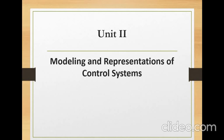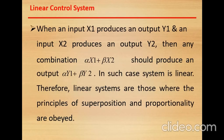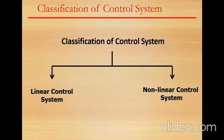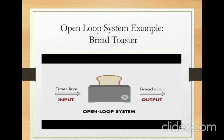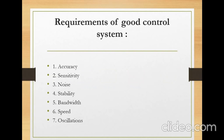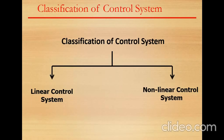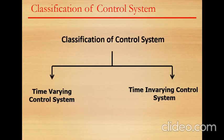Hello students. In today's lecture we start Unit 2, which is modeling and representation of controlled systems. Before that, let us revise what we covered in the last lecture: we revised concepts from the first lecture, saw an example of open loop and closed loop control systems, and discussed requirements of a good control system, as well as classification into linear/nonlinear and time-varying/time-invariant control systems.